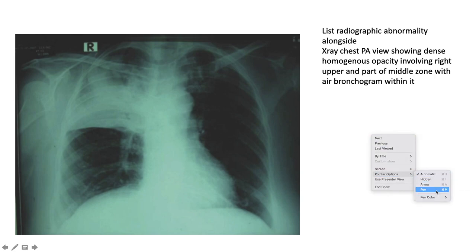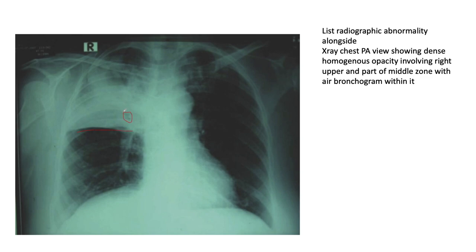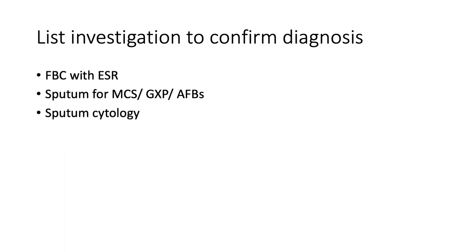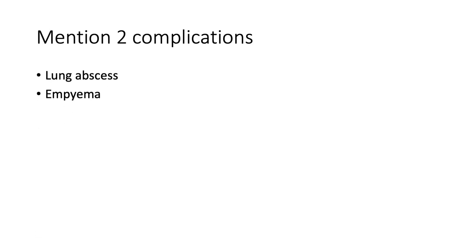This PA film shows a dense homogenous opacity involving the right upper and part of the middle zone with an air bronchogram. Differentials are consolidation, bronchial carcinoma, and TB. If going the consolidation route, aim to diagnose lobar pneumonia — use your CURB-65 index to grade severity. Investigate with full blood count and ESR, sputum for microscopy, culture and sensitivity, GeneXpert, AFB, and sputum cytology. Two complications of lobar pneumonia are lung abscess and empyema.